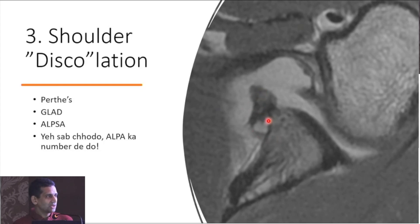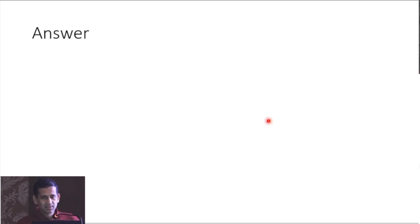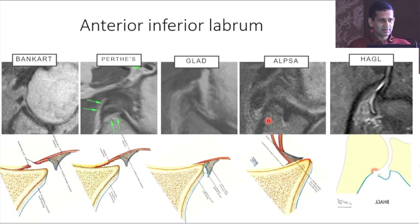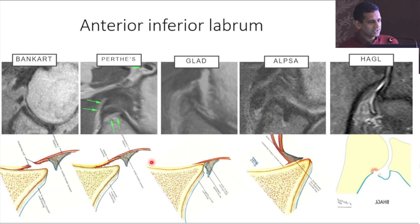That's called an ALPSA lesion, which is an anterior labral periosteal sleeve avulsion. The periosteum gets avulsed and that piece of labrum or bone and labrum gets buckled in between. To see the whole variety of lesions with anterior dislocation: a Bankart lesion is essentially where the full labrum is off and the periosteum is torn.